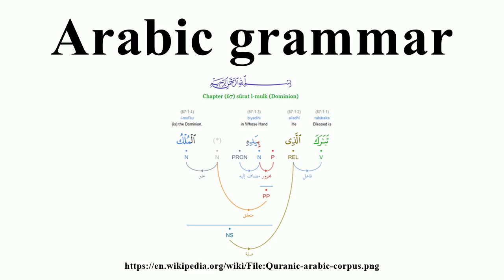Variant forms exist for all but the first person singular; the same forms are used regardless of the part of speech of the word attached to. In the third person masculine singular, 'hu' occurs after vowels ending in u or a, while 'hi' occurs after vowels ending in i. The same alternation occurs in the third person dual and plural. In the first person singular, however, the situation is more complicated: 'ni' (me) is attached to verbs, but 'ya' (my) is attached to nouns. 'Ya' is attached to nouns whose construct state ends in a long vowel or diphthong, while 'i' is attached to nouns whose construct state ends in a short vowel. Furthermore, the u of the masculine sound plural is assimilated to i before ya.